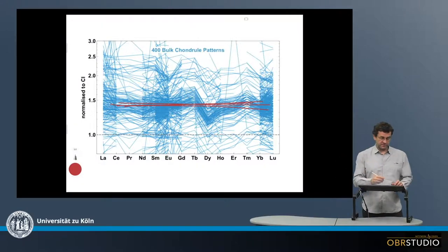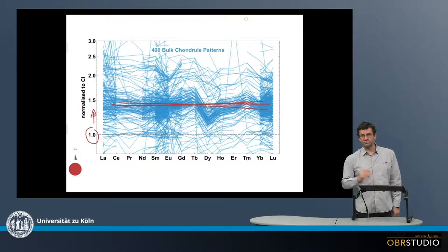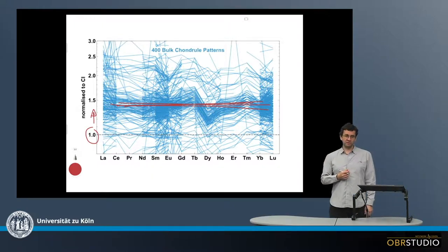Also, they are slightly enriched relative to C-i, so C-i is here, and they are slightly enriched by a factor of maybe something like 1.5.